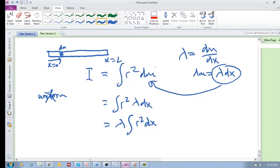But if lambda is a constant, that means your mass is evenly distributed—it's uniform. Now we've got it in a form where we're looking at how it changes as you move along the x-axis.